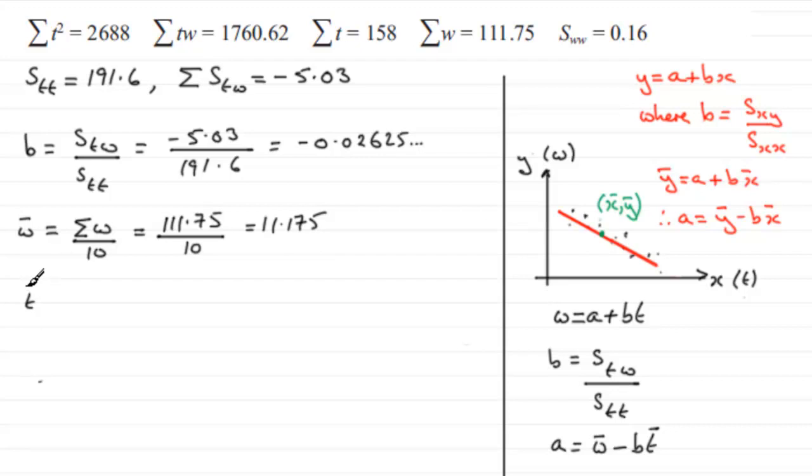Now we get t bar, mean of the t's. Similarly it's going to be sigma t divided by 10. Sigma t, that's 158. Divide that by 10. And you've got 15.8.